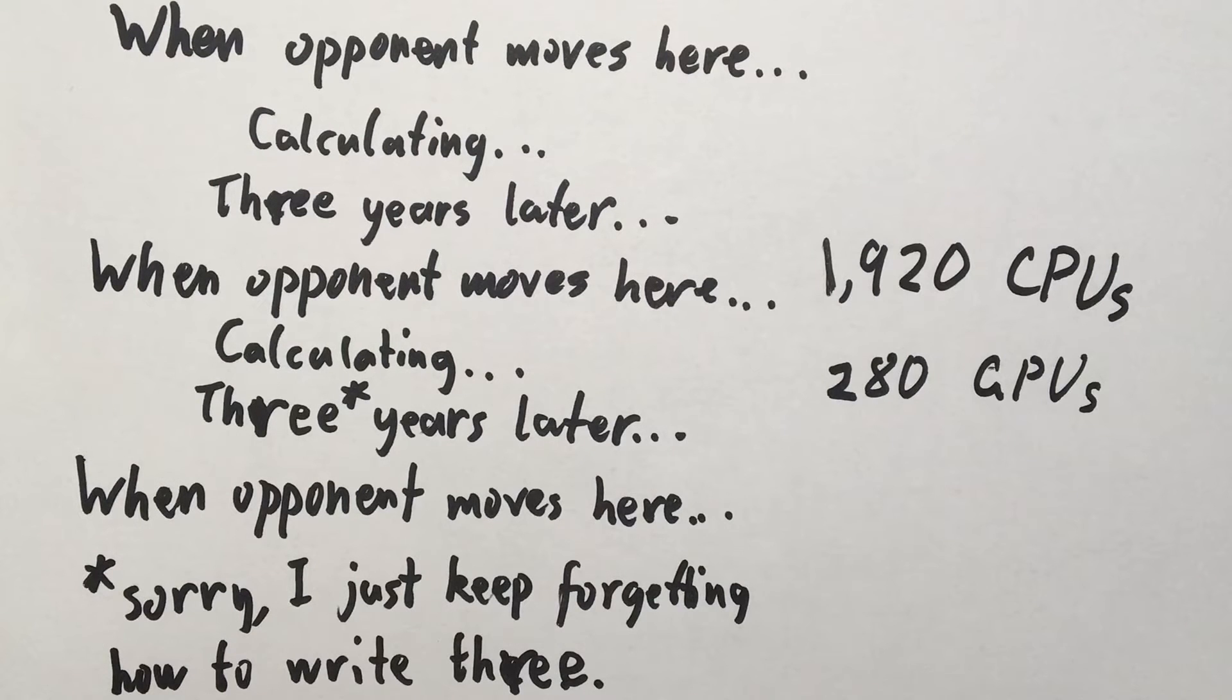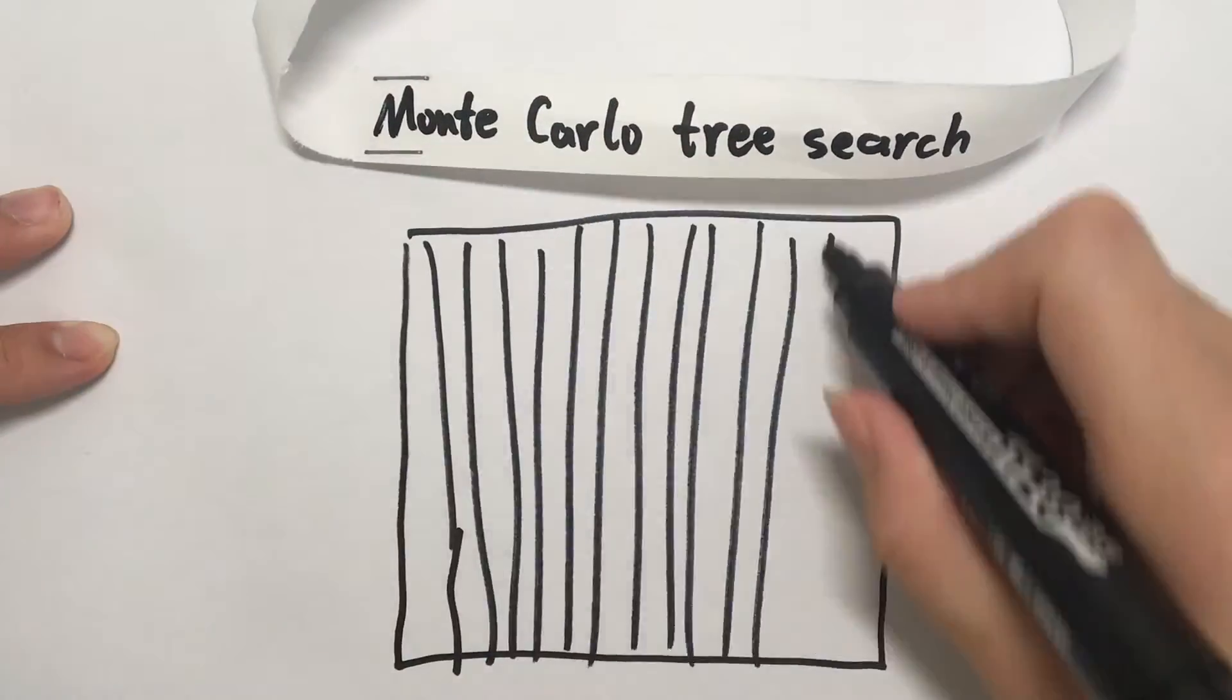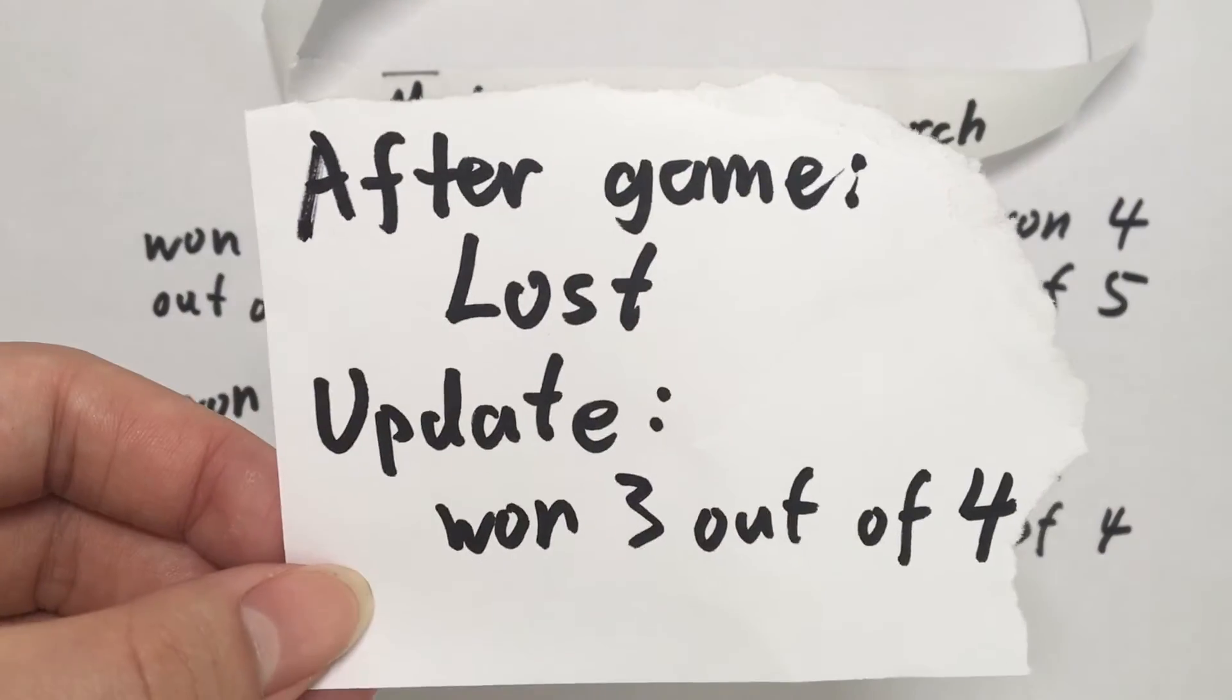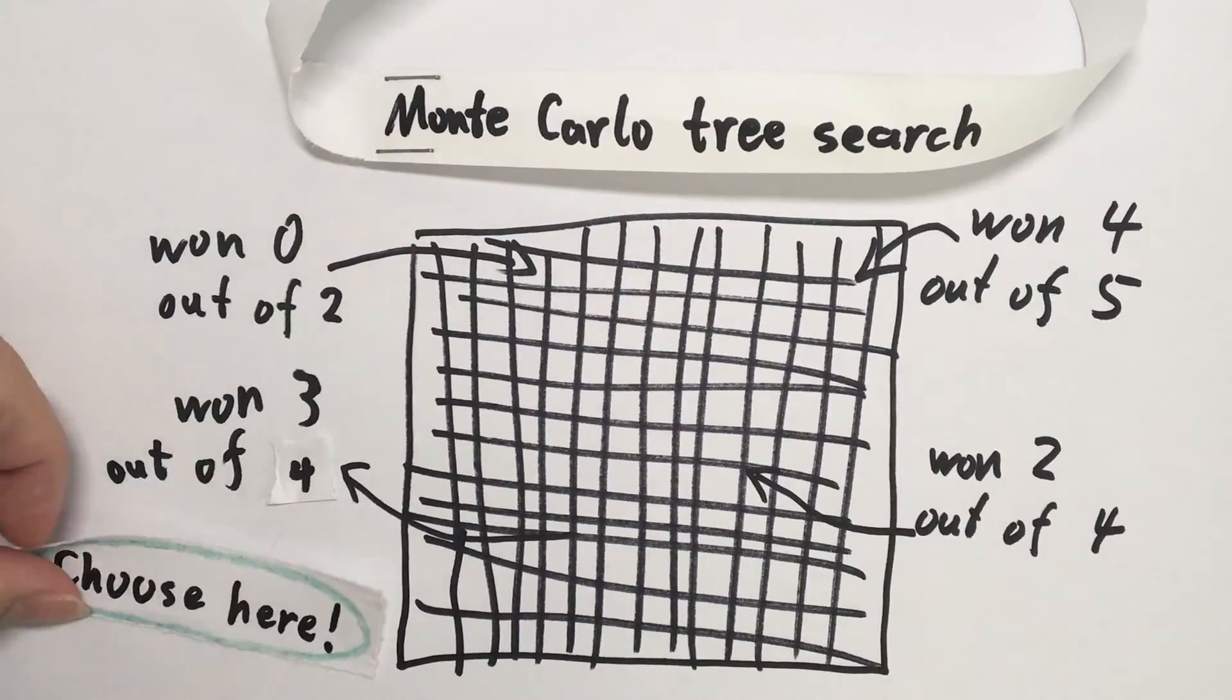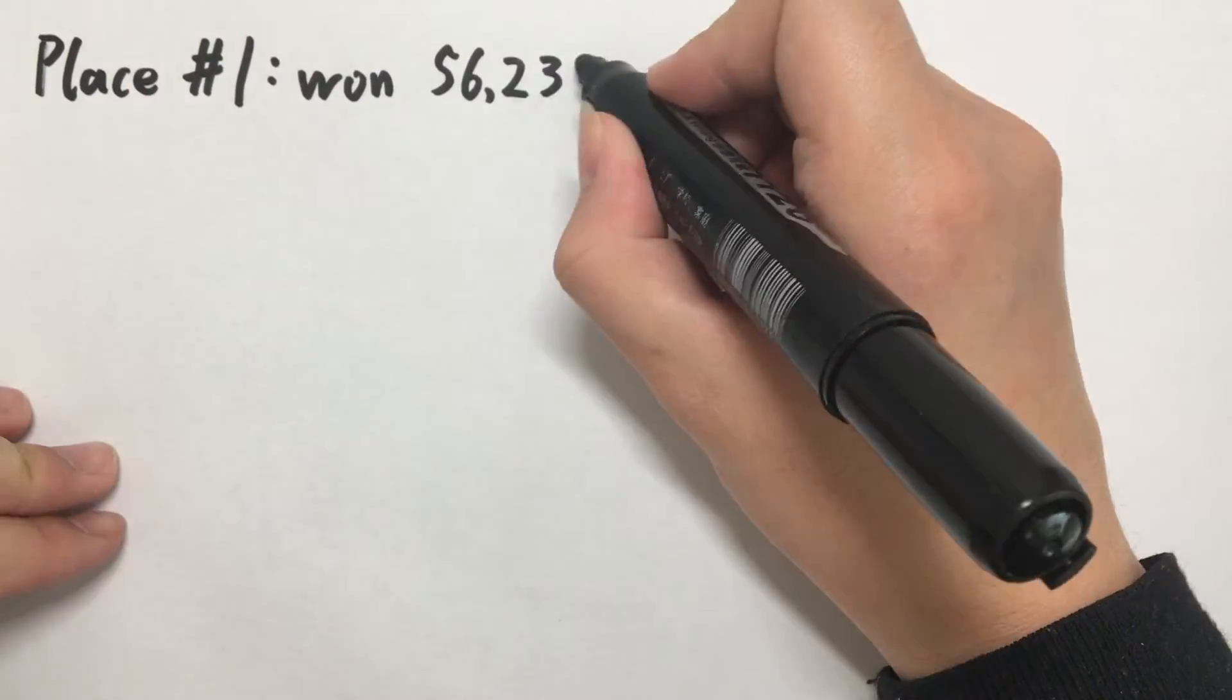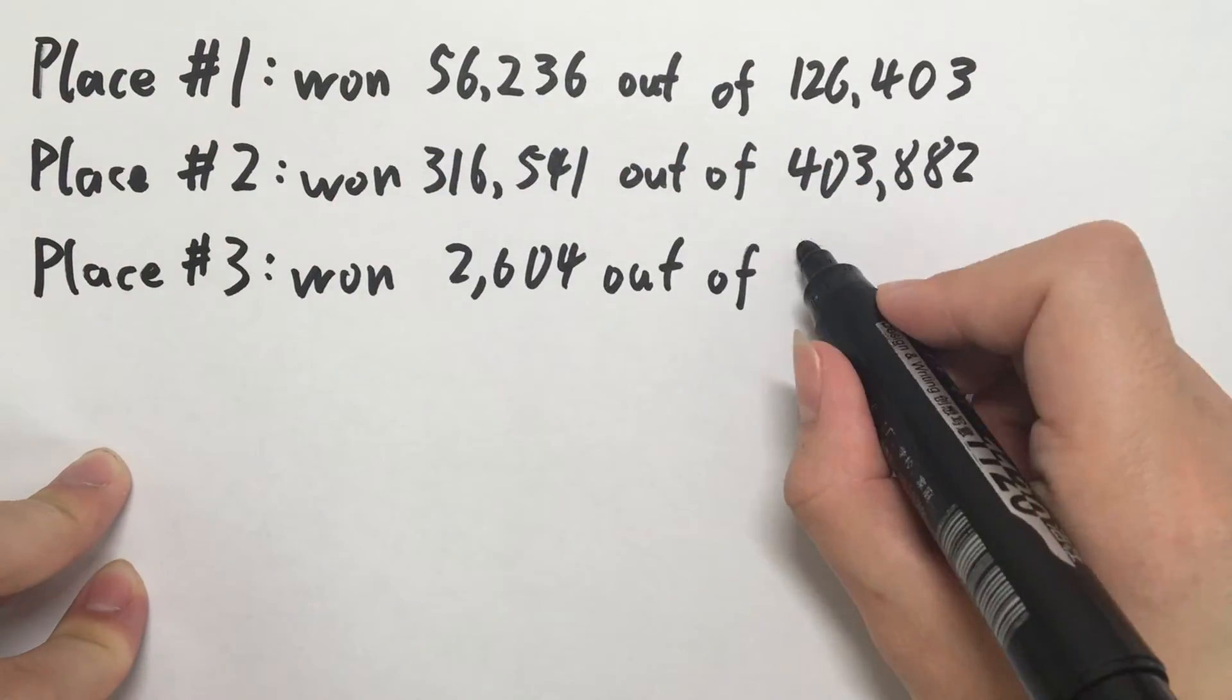So it uses another tree search, called a Monte Carlo tree search. In this search, you only try the moves that are the most promising. Each time AlphaGo finishes a game, it updates its record of how many games each move won. After numerous trials, AlphaGo would have a rough idea of which moves are more likely to make it win.